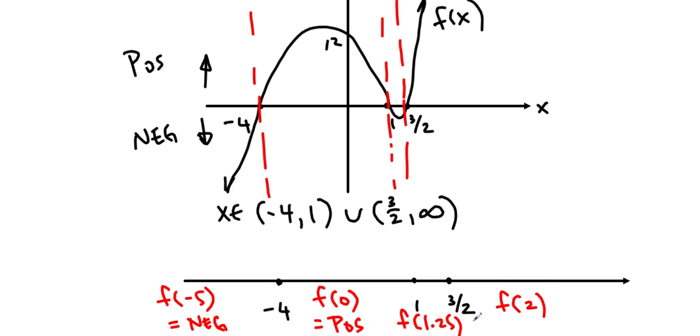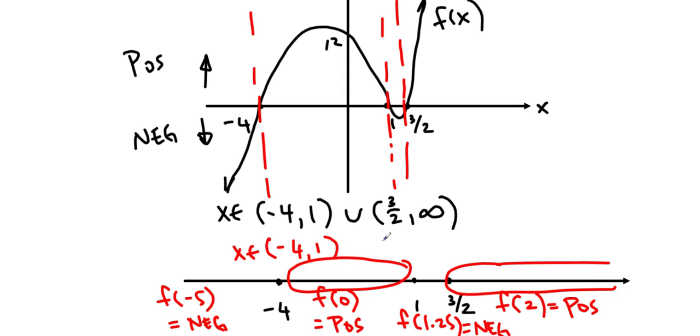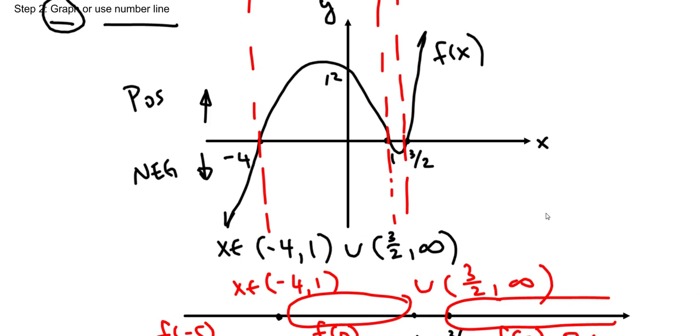If this is negative and this is positive, then we know what sections we're going to look at. We want anything that's in here and anything that's up here. You can see that the answer is going to end up being the same. It's x in this section, -4 to 1, union this section, 3/2 to infinity. That's how you use the number line to do it. It's basically just substituting in and then applying that to the number line.